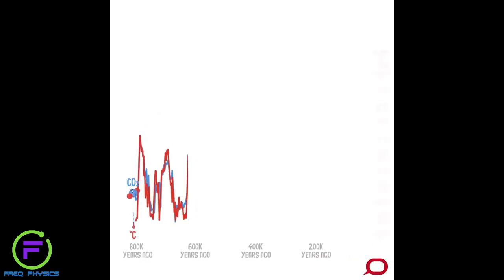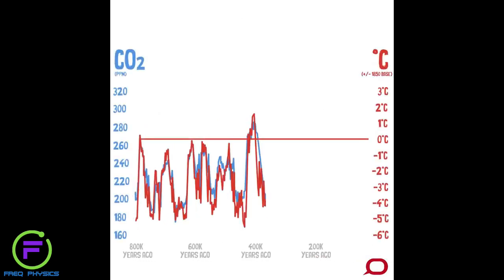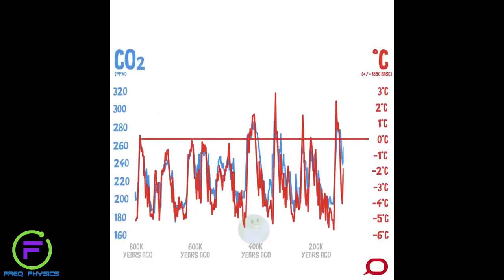Temperature and CO2 have fluctuated together through ice ages and warm periods, called interglacials. Slow changes in the Earth's orbit around the Sun initiated the ice ages. CO2 was a natural amplifier, causing the global climate to warm and cool through each cycle.